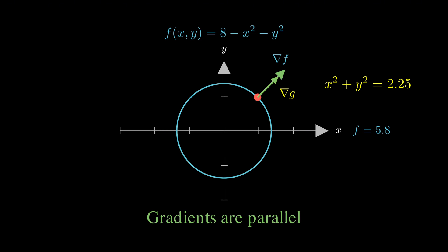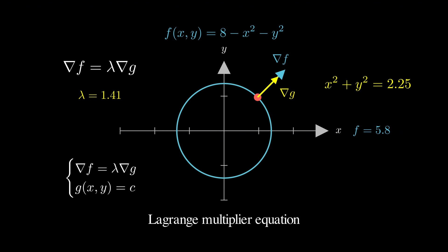This geometric observation translates directly into the mathematical equation at the heart of Lagrange multipliers. Gradient f equals lambda times gradient g. Where lambda is a scalar, we call the Lagrange multiplier. It tells us how much we need to scale the gradient of g to make it match the gradient of f. Together with our original constraint equation, this gives us a system of equations we can solve to find our optimal point.